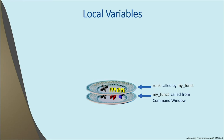When zonk completes and returns, MATLAB removes zonk's frame from the stack, its local variables x and max disappear, and MYFUNCT becomes active again. MYFUNCT continues exactly from where it left off, with its x still in its frame with the same value it had when MYFUNCT was paused. Changing one function's x has no effect on the other's. They are separate variables with separate values in separate frames accessed by separate functions.